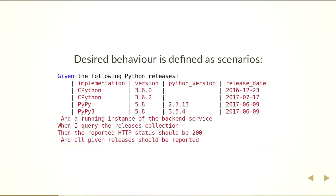The big thing about behavior driven development is that desired behavior is defined as scenarios. As my running example I'm going to use a piece of a side project I'm currently working on that will eventually track how long it takes for new Python releases to make it through various distribution channels — Linux distros, commercial redistributors, online programming platforms. The specific piece relevant today stores and reports details about Python implementation release dates. The scenario on screen is a typical example of a behavioral test case. We start by defining initial conditions in 'given' clauses — we need example releases in the database and a local test server running.